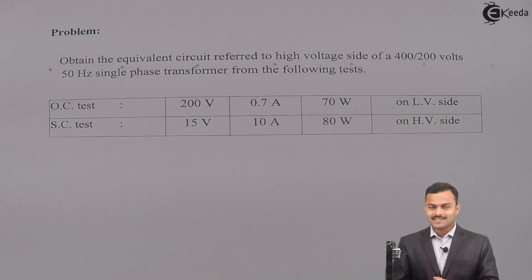They have given test result. OC test: voltage 200, current 0.7 ampere and power 70 watt and the test is performed on low voltage side. Short circuit test: 15 volt, 10 ampere, 80 watt and that is performed on HV side. See how to solve this type of problem.